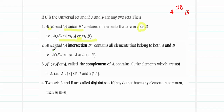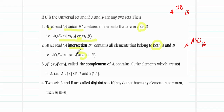The next symbol looks like an inverted U — you call it A intersection B, written A∩B. Intersection contains all elements that belong to both A and B. It is like the AND operator in logic gates — only if both conditions are met is there an output. We denote it as: A∩B = { x | x ∈ A and x ∈ B }.